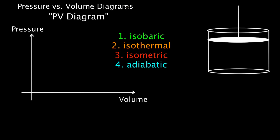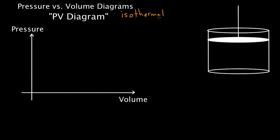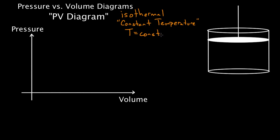Last time we talked about isobaric processes. This time let's talk about isothermal processes. Iso means constant, thermal is short for temperature. So this is a process where the temperature remains constant — T equals a constant — which means the change in temperature is zero.